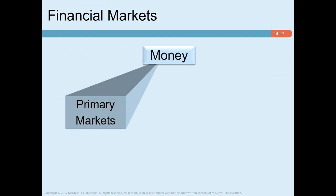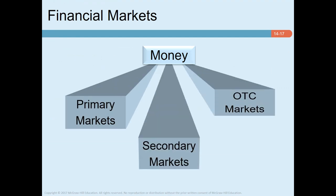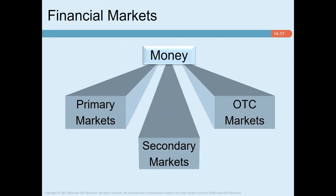Financial markets are primarily of two types: primary markets and secondary markets. The primary market is a market for the issuance of new securities. So when a company issues new securities, which is known as an initial public offering, that is a primary market transaction. If you buy shares from an initial public offering, that is a primary market transaction.